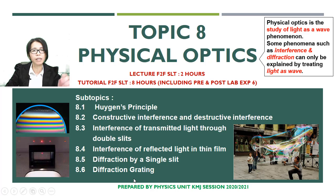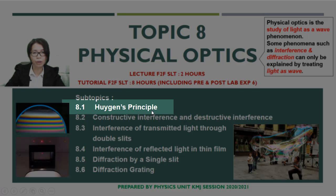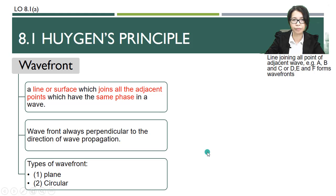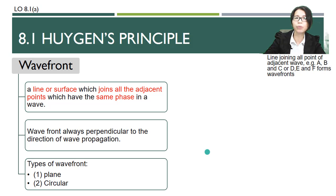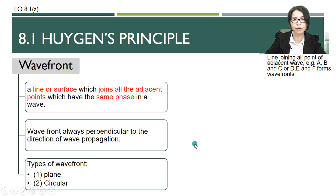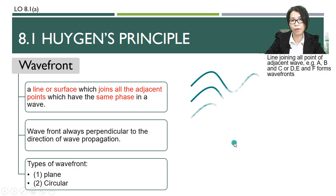In this video, I am going to focus on 8.1 Huygens' Principle. Before we move into the details of what is meant by Huygens' Principle, we have to recall our prior knowledge of what is meant by Wave Fronts. A Wave Front is a line or surface which joins all the adjacent points which have the same phase in the wave.